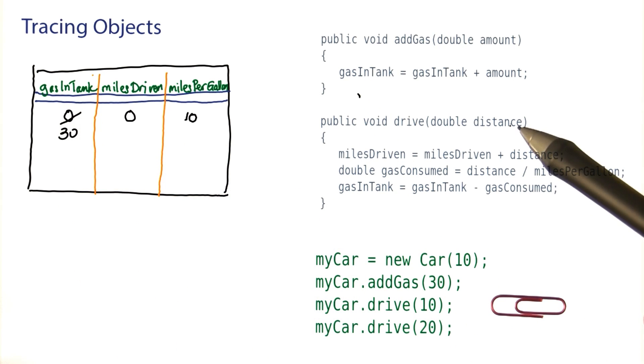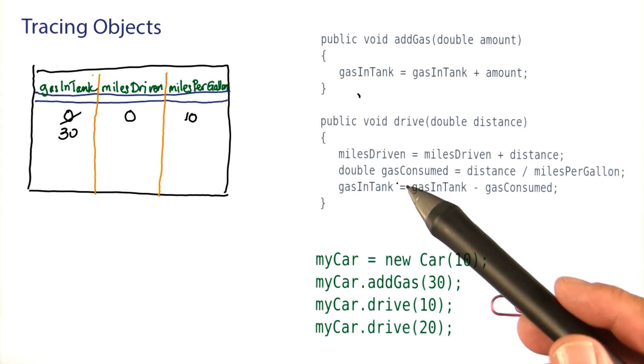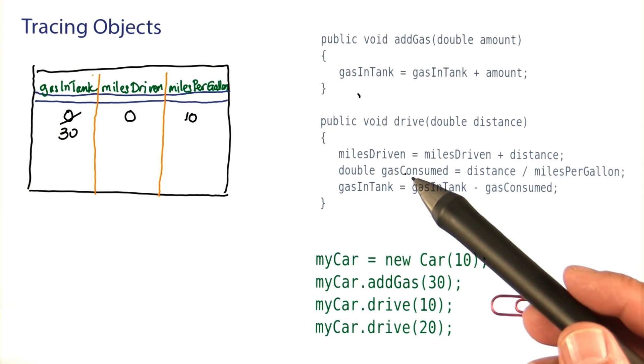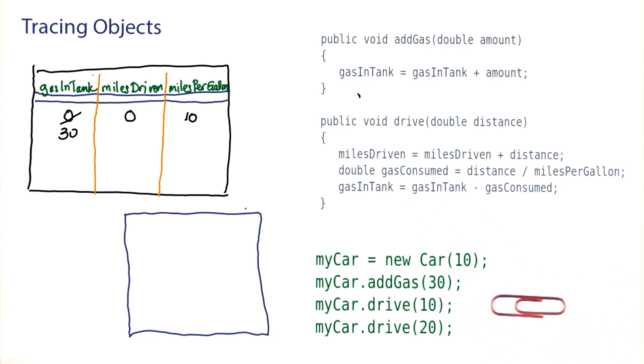Now we drive 10 miles. So distance is 10. And since this method is a bit longer, and it has another local variable here, it makes sense to make another card for it. Or actually since I ran out of simulated cards, I'll use a napkin. So the distance parameter is 10. We're here.